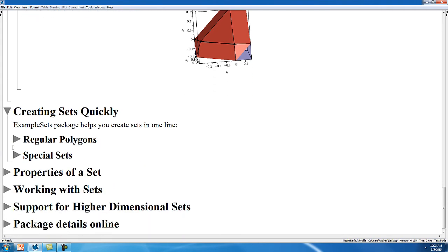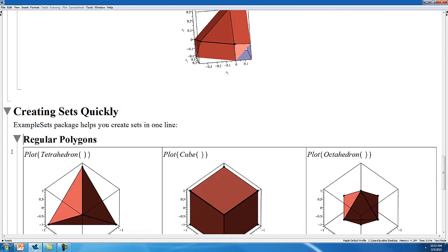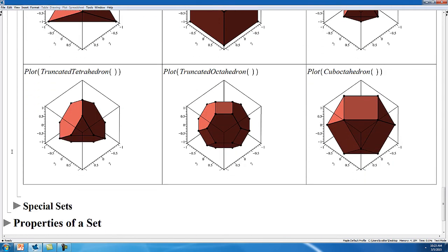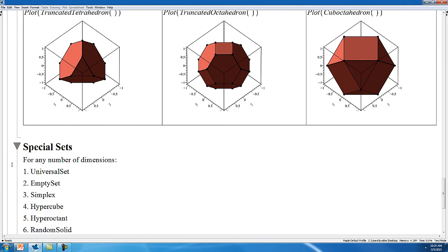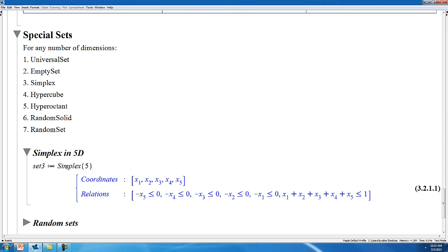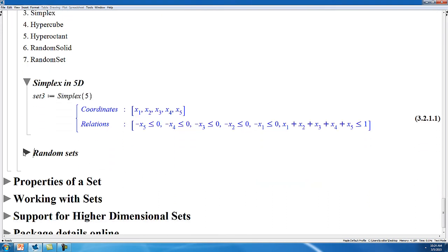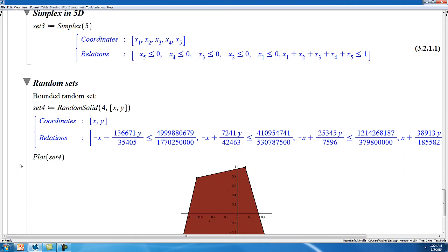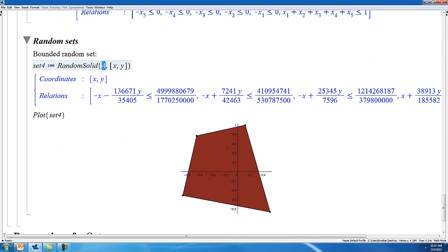There have been a whole host of commands that have been created so that you can make sets in one command line. Some of these examples include some polygons, the regular polygons, and a number of special sets that can be created in any number of dimensions. So for example, you can create a five-dimensional simplex using this one command, and it automatically generates the list of relations that represent this set. In addition, you can create random sets. So this command would generate a random solid with four faces in two-dimensional space. And this is helpful for creating test cases for algorithms or creating pedagogical examples.